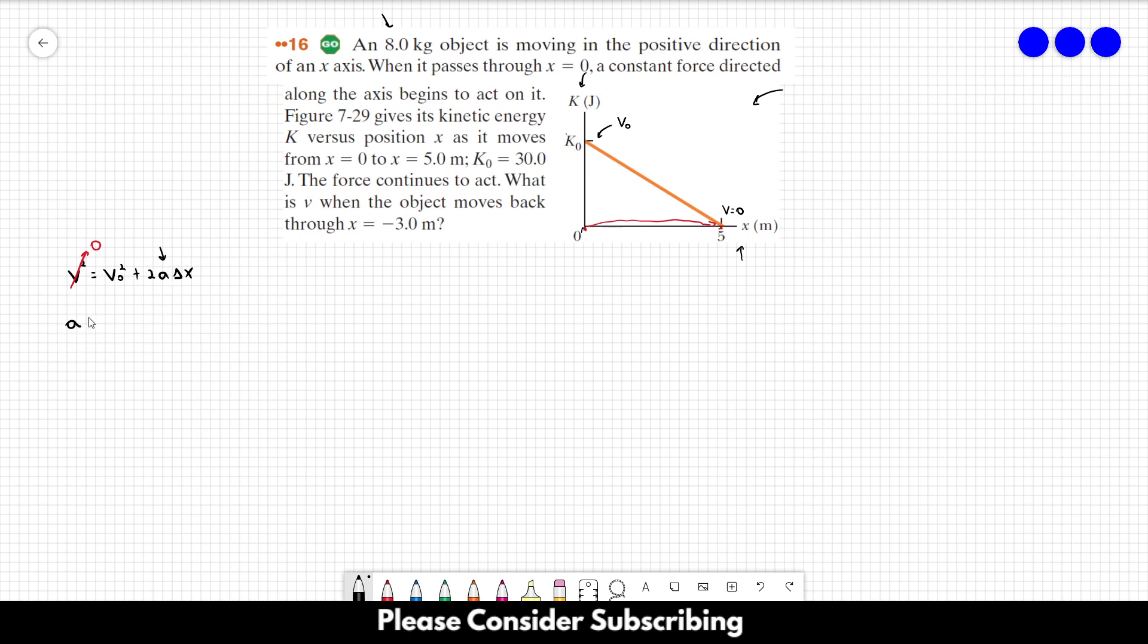So the acceleration is equal to minus V₀ squared divided by 2 times delta x. Delta x we have as well, it's 5 meters.